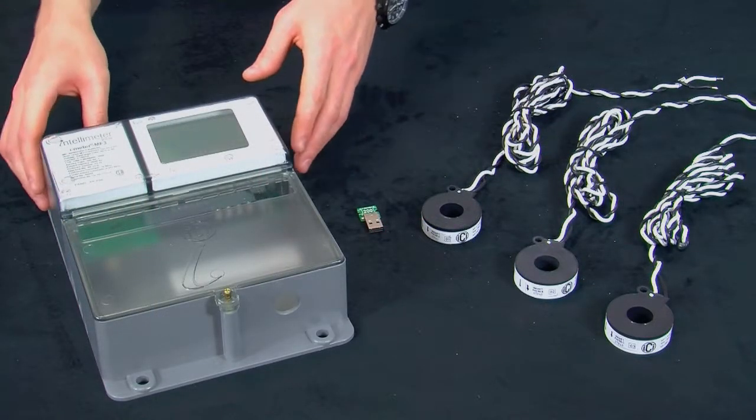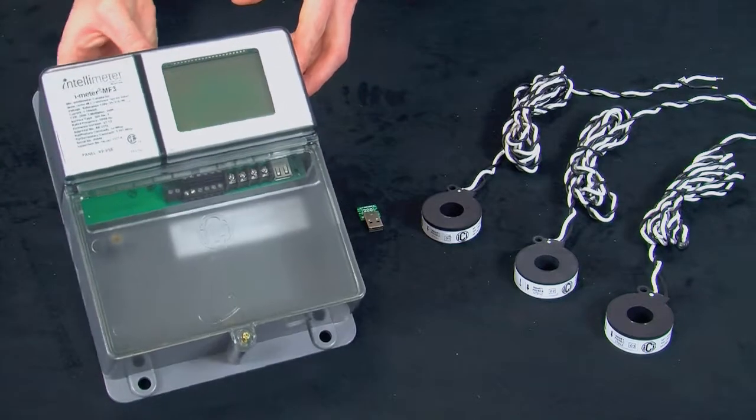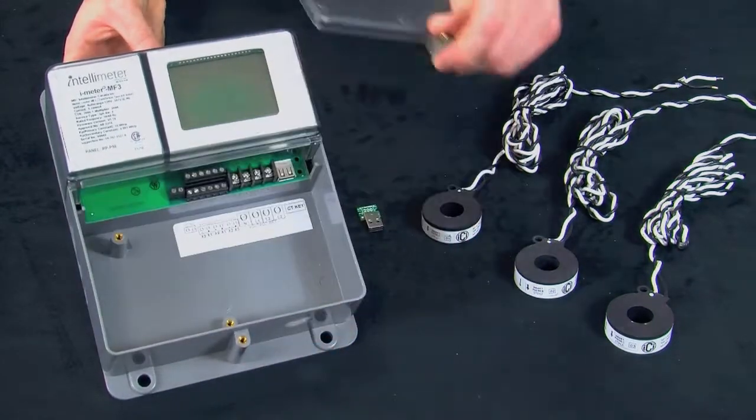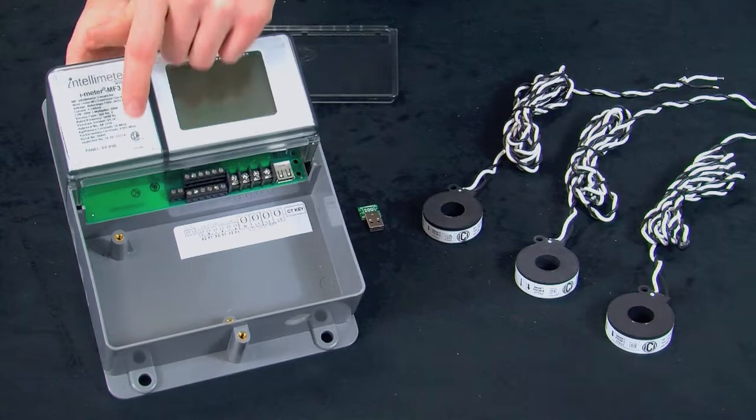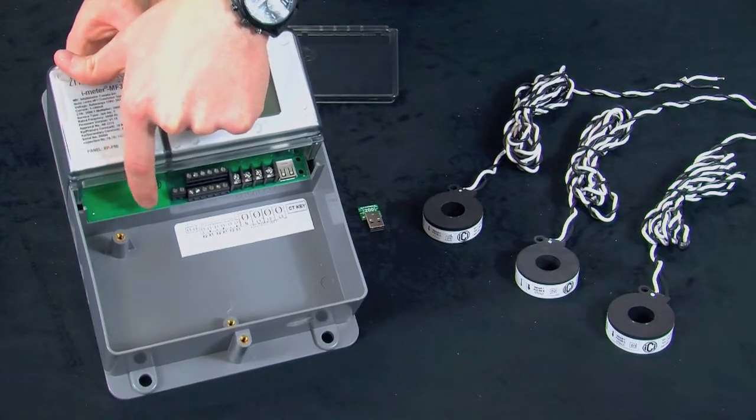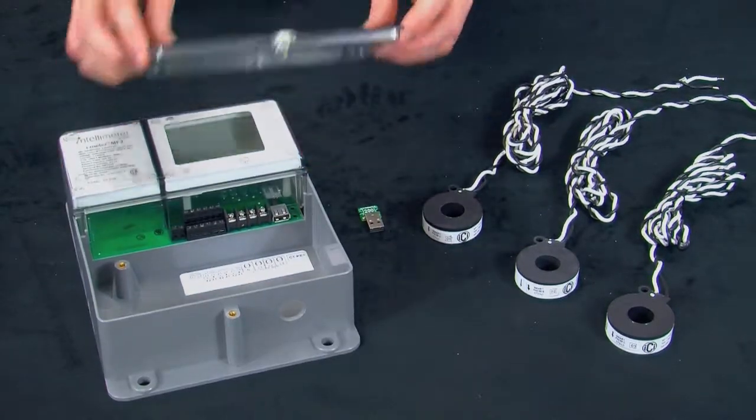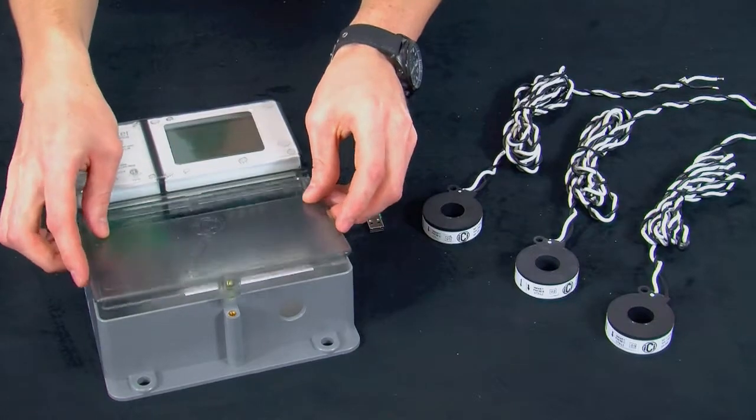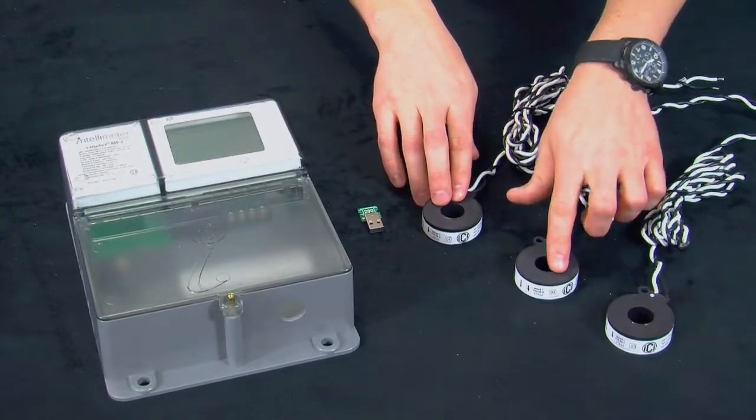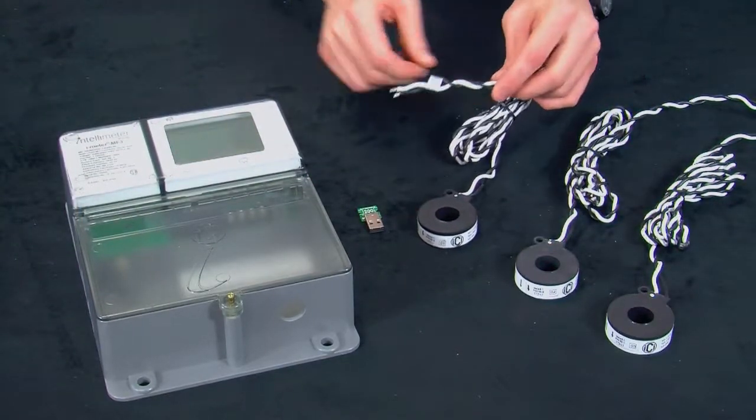So in your package, you should have received the iMeter MF3 itself, depending on what was purchased, possibly an automation module, which would be inserted in this area here. You should have a set of CTs, complete with labels, both on the CT side and the CT lead.